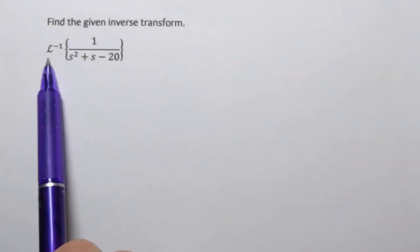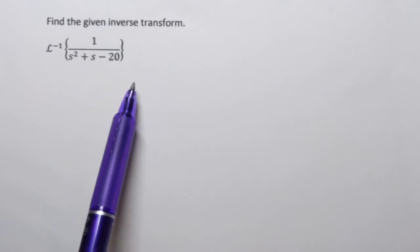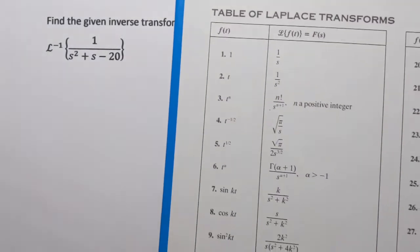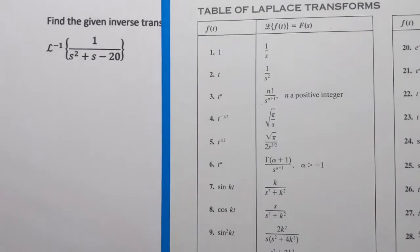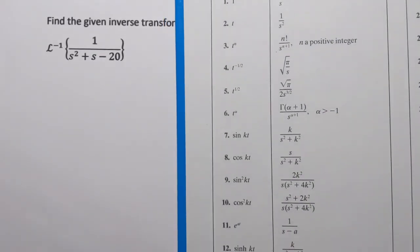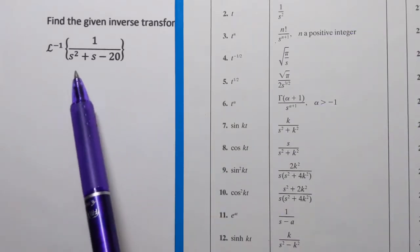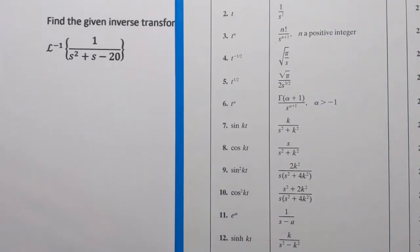We need to find the inverse transform of the function 1 over s squared plus s minus 20. If we look at the table of Laplace transforms, specifically in the second column, since we're doing the inverse transform, we're not going to find any expressions here that contain quadratic trinomials in the denominator.